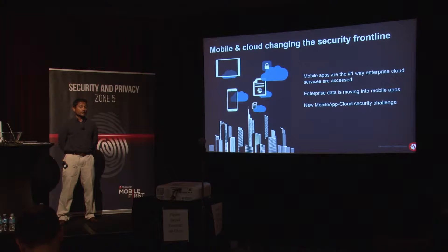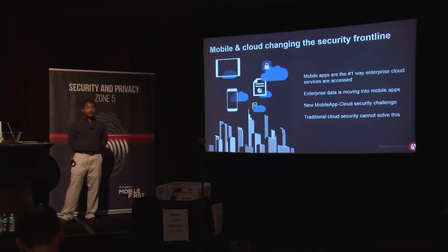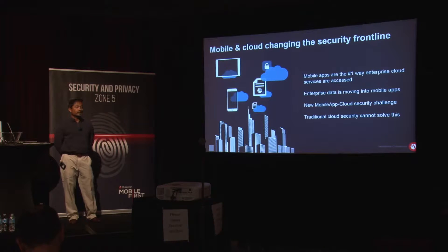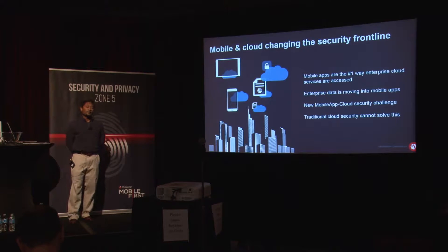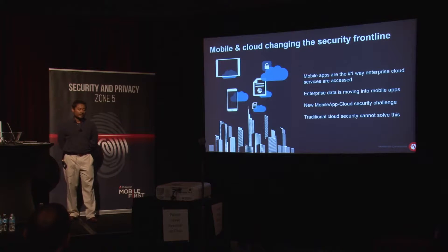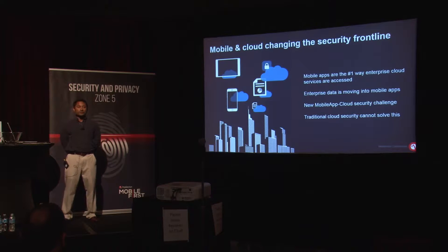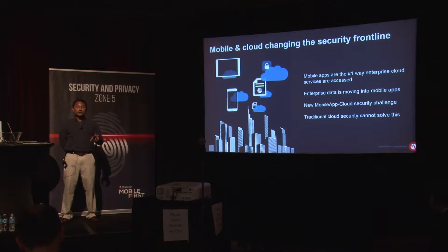This is really important, and you'll see this term used more and more by MobileIron: the mobile app to cloud security problem. As customers start moving to cloud-based services, especially when users are on mobile devices, traditional cloud security vendors cannot solve this on their own. We're talking about identity and access management vendors with cloud-based or on-premise services, and also a new product line called CASBs — cloud access security brokers. These are different mechanisms that try to solve cloud-based security, but they fall short when mobility is involved.